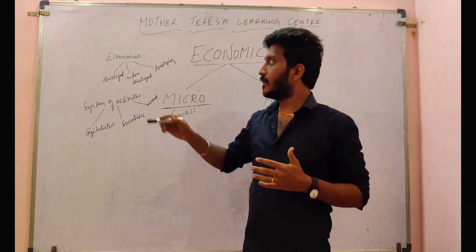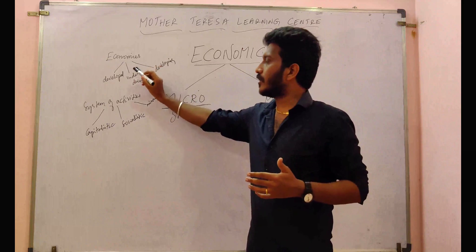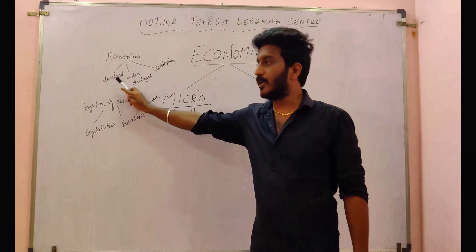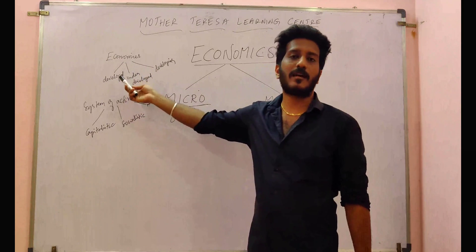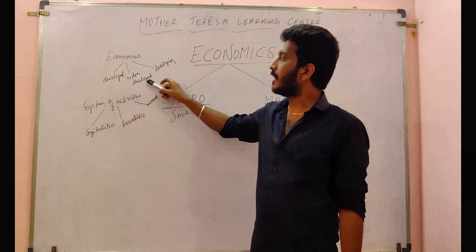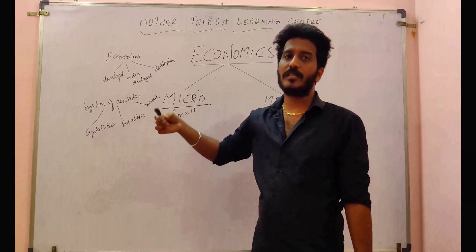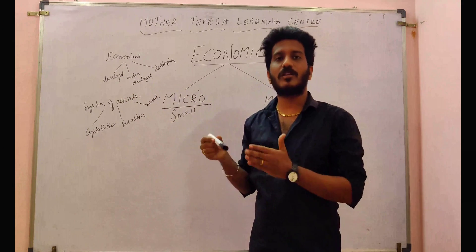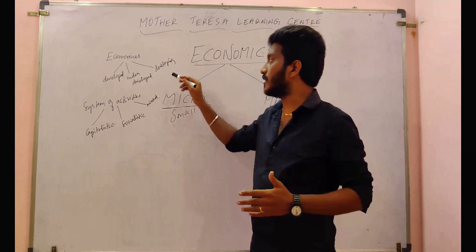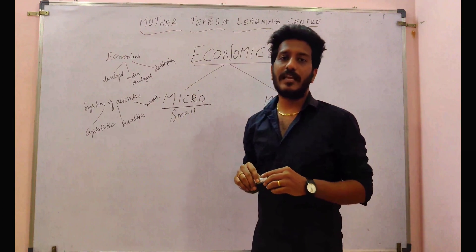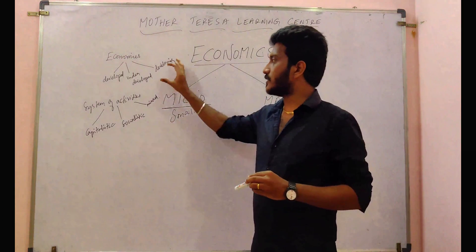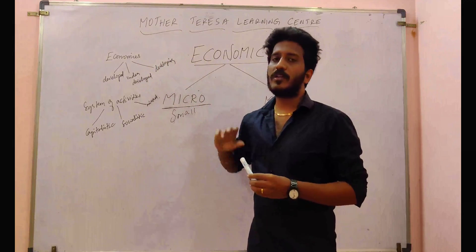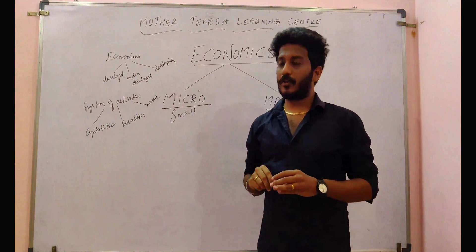Based on the economies, we have three types of economies. Developed economy, like you take the example USA, Germany, Russia. Underdeveloped economy is a country like Africa — African continent countries most are underdeveloped. Developing country is India, one such example. So these are a small introduction about economies.